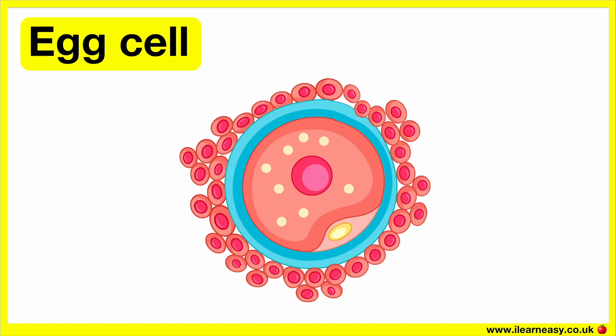Now let's look at the different parts of an egg cell. An egg cell is also known as an ovum. A human egg cell is big and spherical in shape. It contains 23 chromosomes. The egg cells contain the organelles required for the fertilised egg to develop into an embryo and then eventually a human. It's approximately 130 micrometres in diameter. On average, a woman releases just one egg per month.